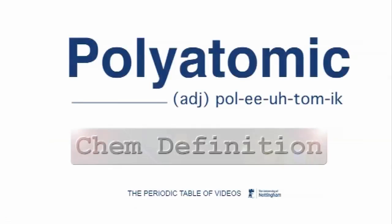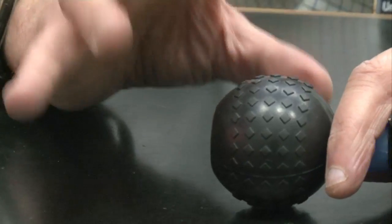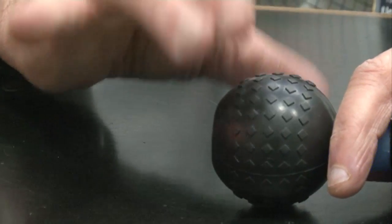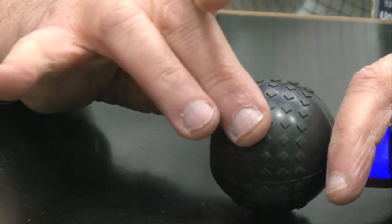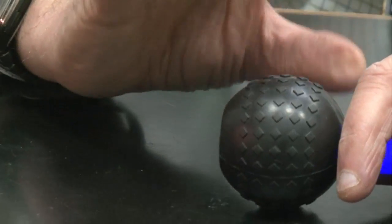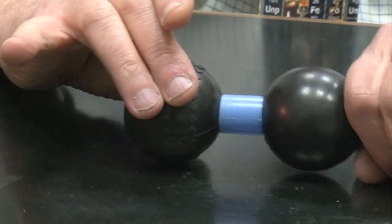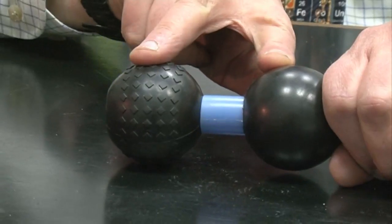This word is polyatomic. It means many atoms. If you have a molecule which has just one atom, like xenon, it's monatomic. If you have two atoms, like oxygen, O2, it's diatomic.